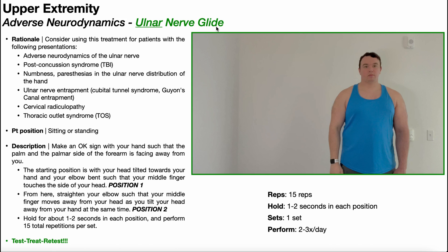You should consider giving ulnar nerve glides to any patients with any of the following presentations. Number one, adverse neurodynamics of the ulnar nerve. Now adverse neurodynamics is a very general umbrella term and doesn't really have a whole lot of meaning. However, in general, if somebody has a positive ulnar nerve tension test, you would probably give them an ulnar nerve glide.